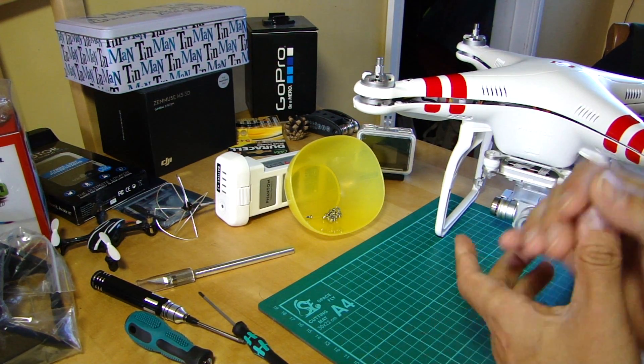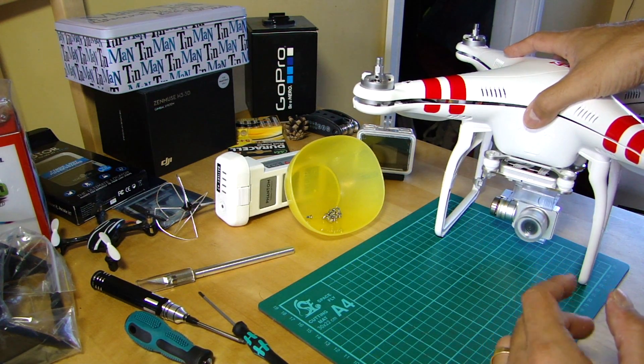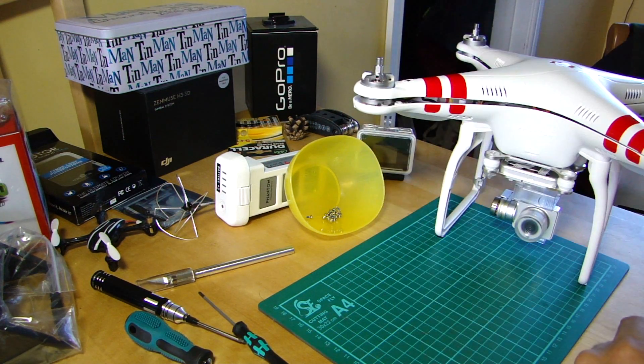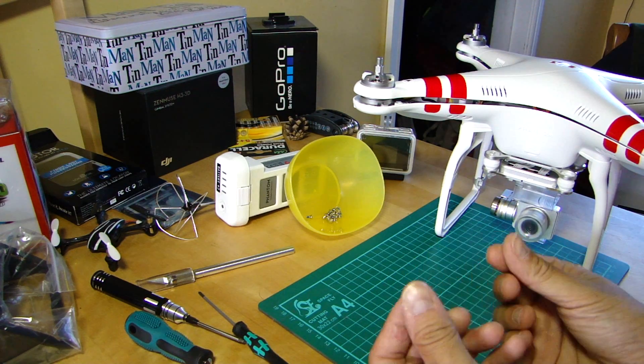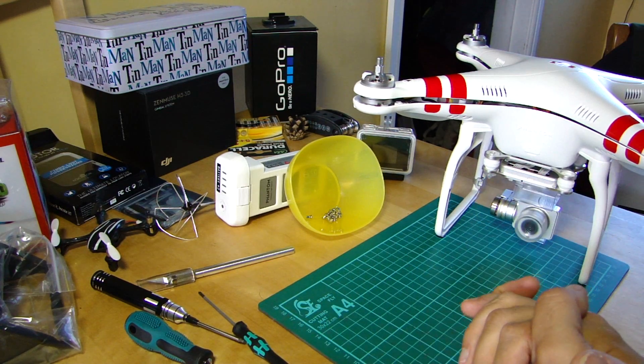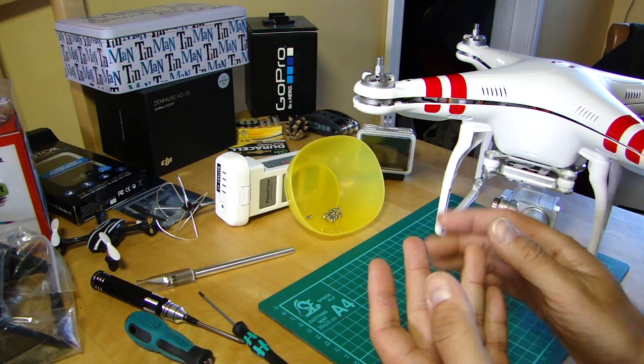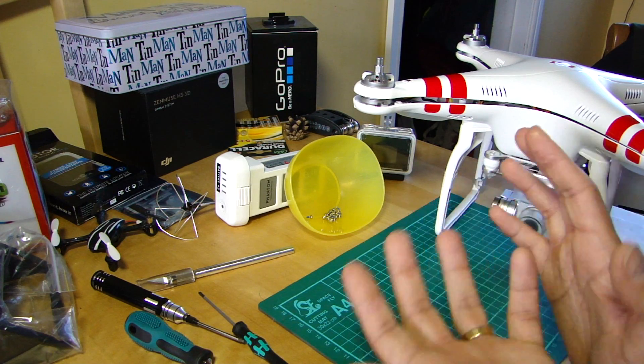Now one of the modifications that has been going around is to take the lid off and line the underside completely with a foil type substance. Obviously you need to make sure that it's insulated and everything else, but that seems to improve. Now the issue with that is potentially busting the warranty because you are adding something in.